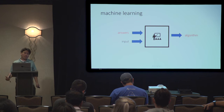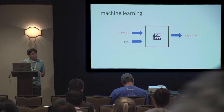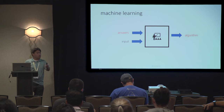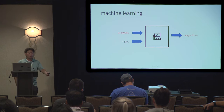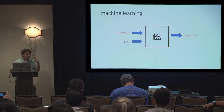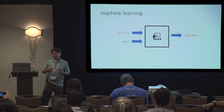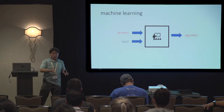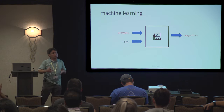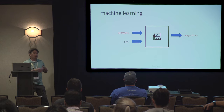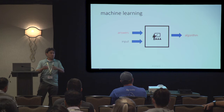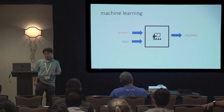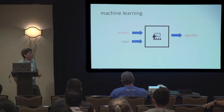In the machine learning world it's the other way around — it's flipped. You need input, and you've also got to give it a bunch of answers. The goal is to teach the computer, based from this input and answers, to build an algorithm for you. So once you realize that's what it's doing, there's a reason why you need a lot of data — a lot of examples of input and answers — so it can find the pattern and build that algorithm.